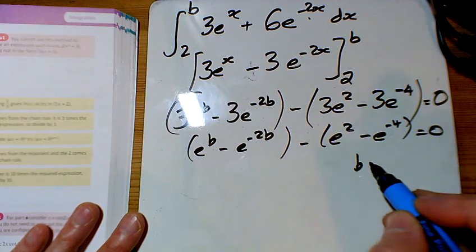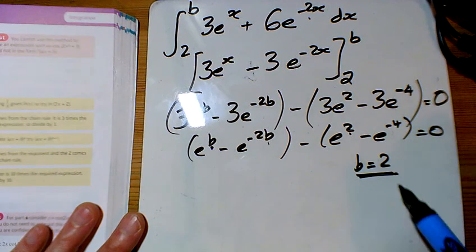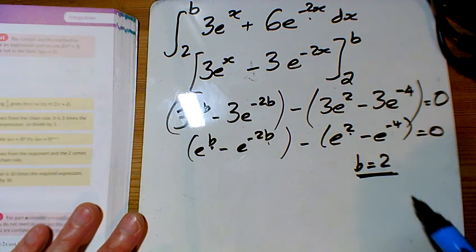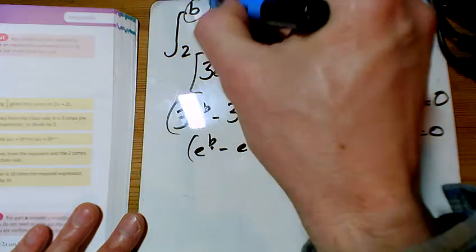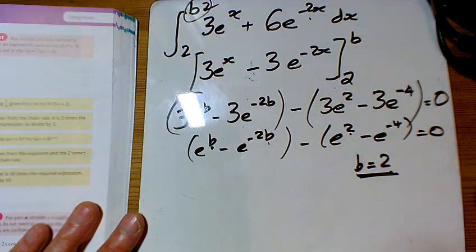And now I'm just going to say b equals 2, because I want a 2 there and a minus 4 there. But I'm puzzled because if b is 2, that's just sticking a 2 up there, and clearly the integral from 2 to 2 will be 0.